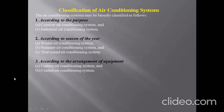Classification of air conditioning systems: air conditioning systems are broadly classified firstly based on purpose. First is comfort air conditioning, which is used for creating comfort inside the room for occupants. Second is industrial air conditioning, for specific applications like packaging of tablets in pharmaceutical industries or CNC applications where you have to keep the temperature of a machine under control.